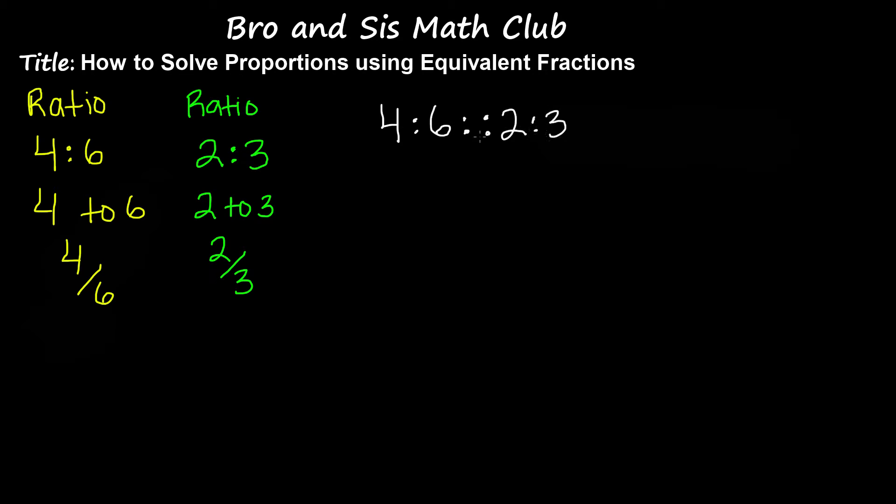As you can see, I do have my two ratios and they are written in the form. And with these four dots, I represent that these two ratios are proportional.